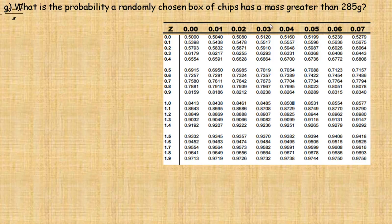So again, we need to find the z-score for 285. So we do 285 minus the mean divided by the standard deviation, and we get 1.66. So we want the probability that it's greater than 1.66. Now remember, the tables give the probability that it's less than.